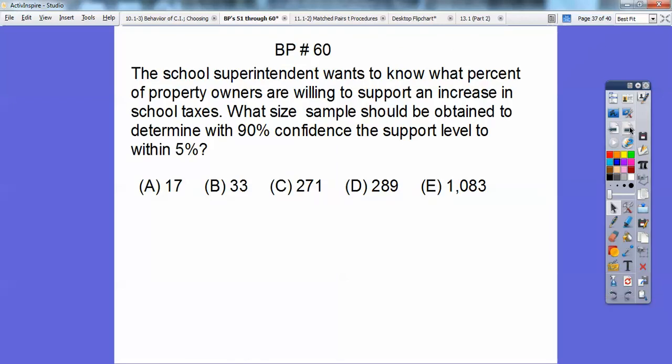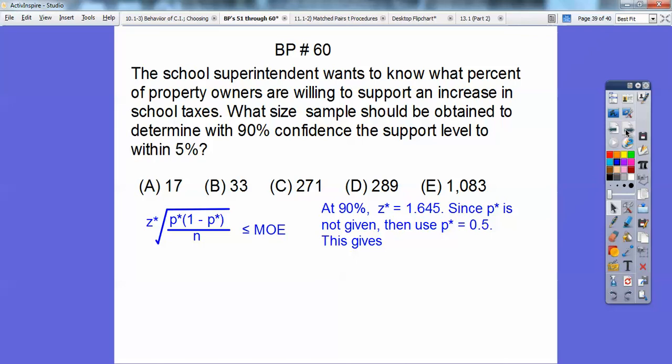All right, so a school superintendent wants to know what percent of the property owners are willing to support an increase in school taxes. So what's the sample size to obtain with the 90% confidence interval to support the level within 5 percent? So remember, here's our sample size calculation. So our Z-scores and then our proportions divided by the square root of N, proportion times 1 minus proportion. Now, they didn't give that to us, so do you remember what we put in here where they don't give it to us? We put 0.5 in for those guys right there, and then less than or equal to my margin of error, which in this case is 0.05. 90% confidence interval, I get a Z-score of 1.645. And they didn't give us our proportions, so we're gonna use 0.5, so that's gonna give us that. And I get choice C on that one.